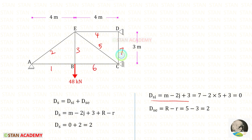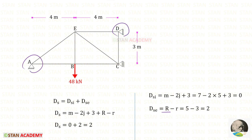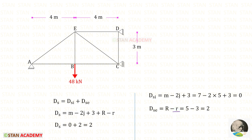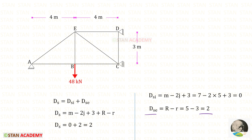4, 5, 6, 7. J is the number of joints. Let us count the joints: 1, 2, 3, 4, 5. For DSI we will get 0. Let us find the external static indeterminacy. R is the number of reactions. At points A and D there are hinged supports — in hinged supports there will be two reactions. At point C there is a roller support — in a roller support there will be only one reaction. So 2 plus 2 plus 1 equals 5. Small r is the available equilibrium conditions: sigma M = 0, sigma V = 0, and sigma H = 0. For DSE we will get 2, so the degree of static indeterminacy of the truss is 2.